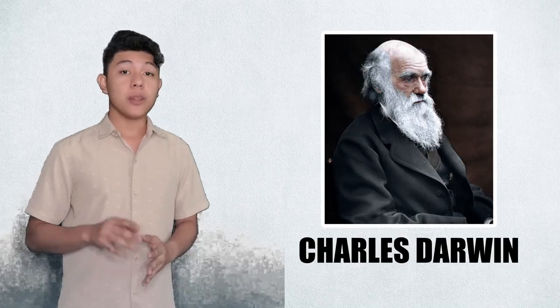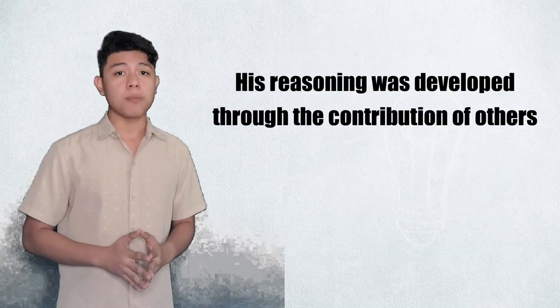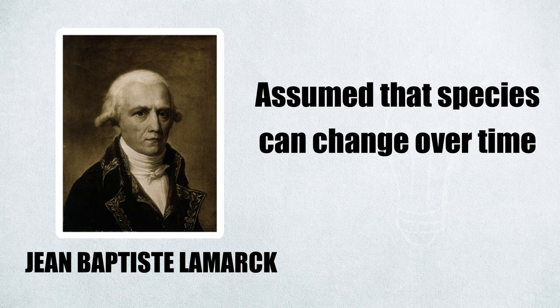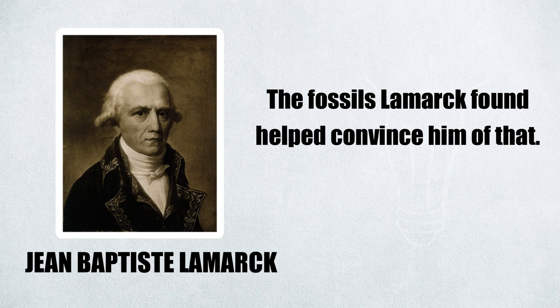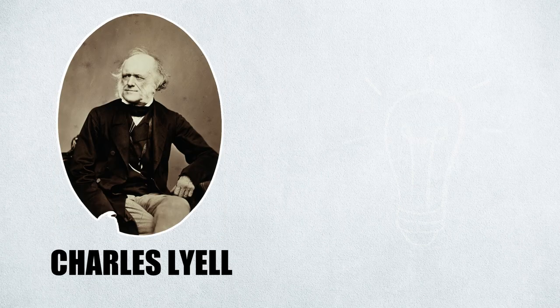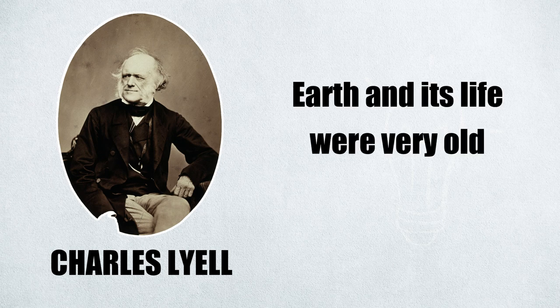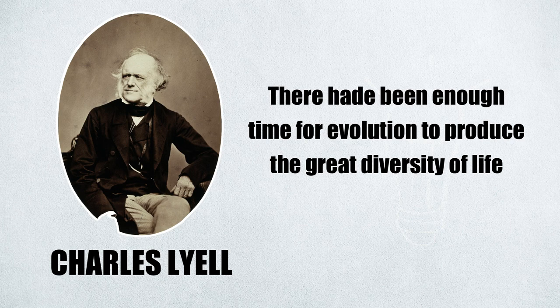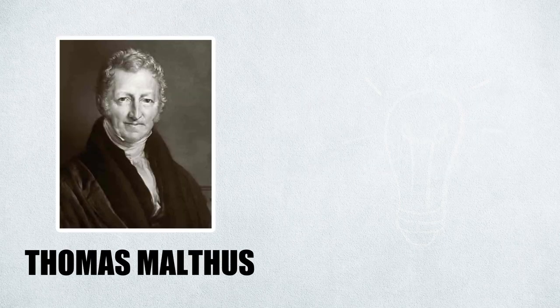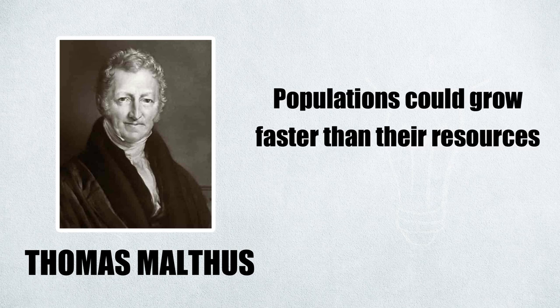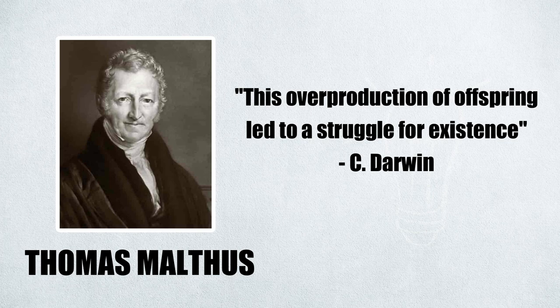The most famous theory of evolution was natural selection by Charles Darwin. It took Darwin years to form his theory, and his reasoning was developed through the contributions of others. Just like Jean-Baptiste Lamarck, Darwin assumed that species can change over time, and the fossils he found helped convince him of that. From Charles Lyell, Darwin saw that the earth and its life were very old — thus, there had been enough time for evolution to produce the great diversity of life Darwin had observed. From Thomas Malthus, Darwin knew that populations could grow faster than their resources, leading to a struggle for existence.